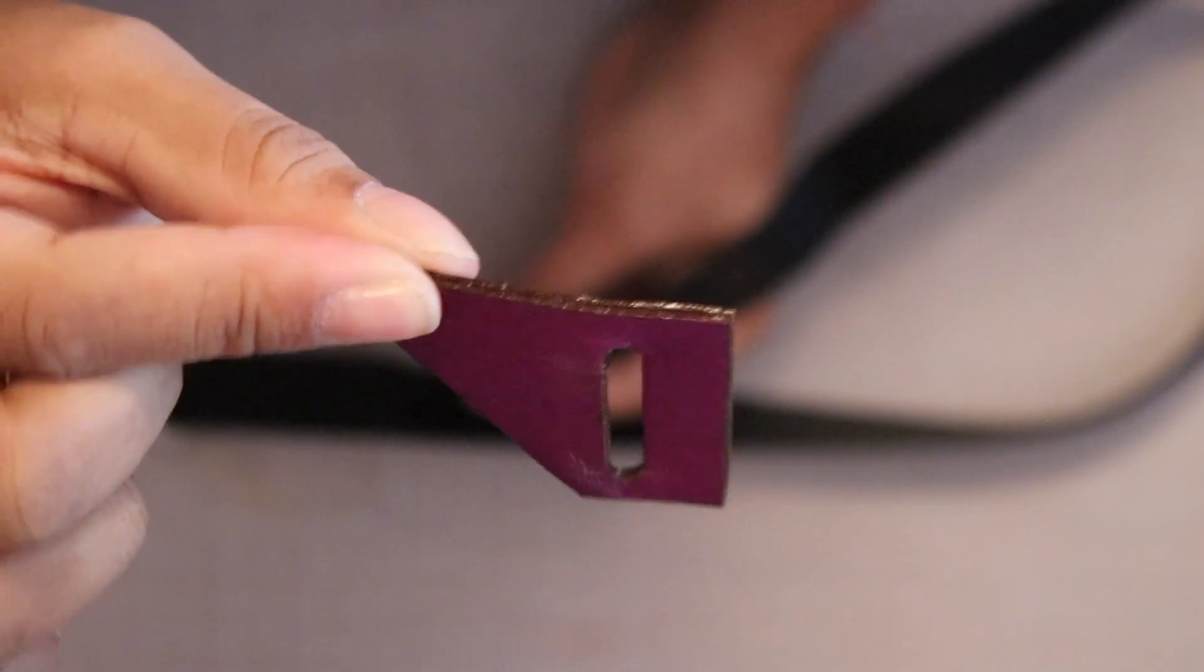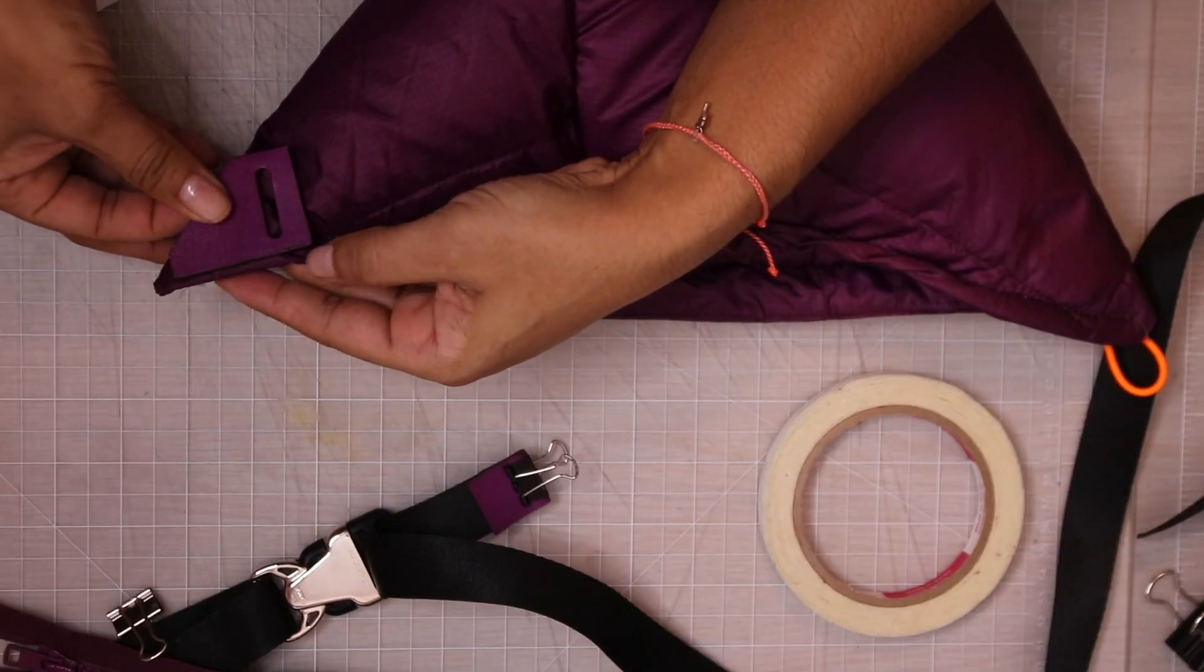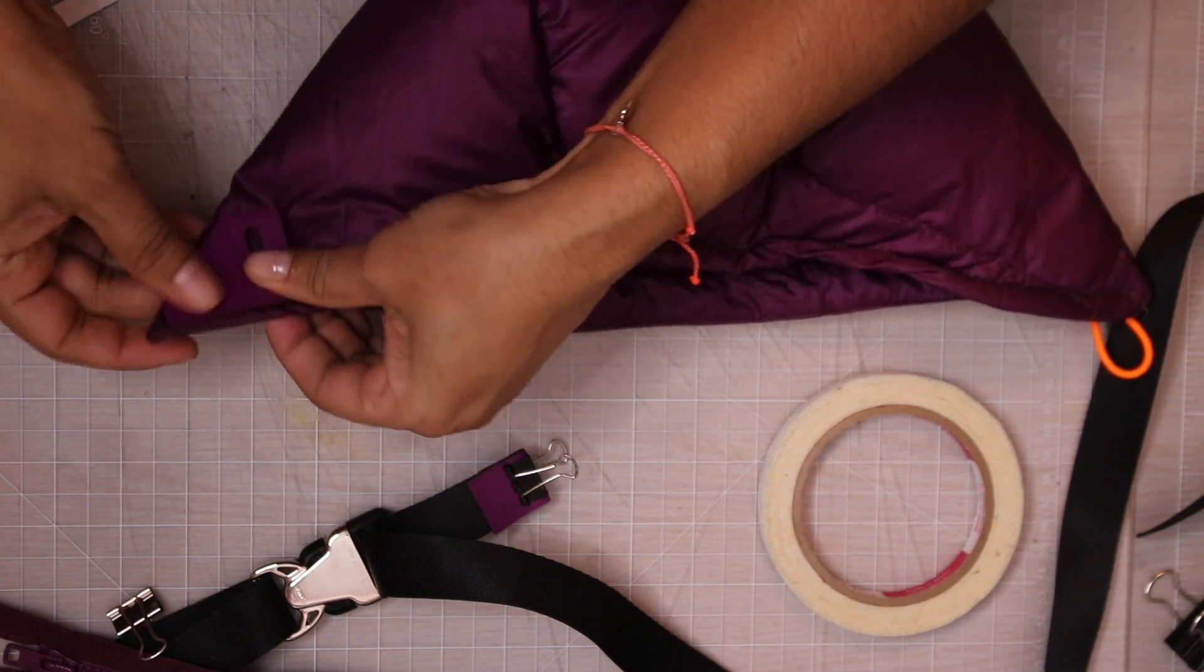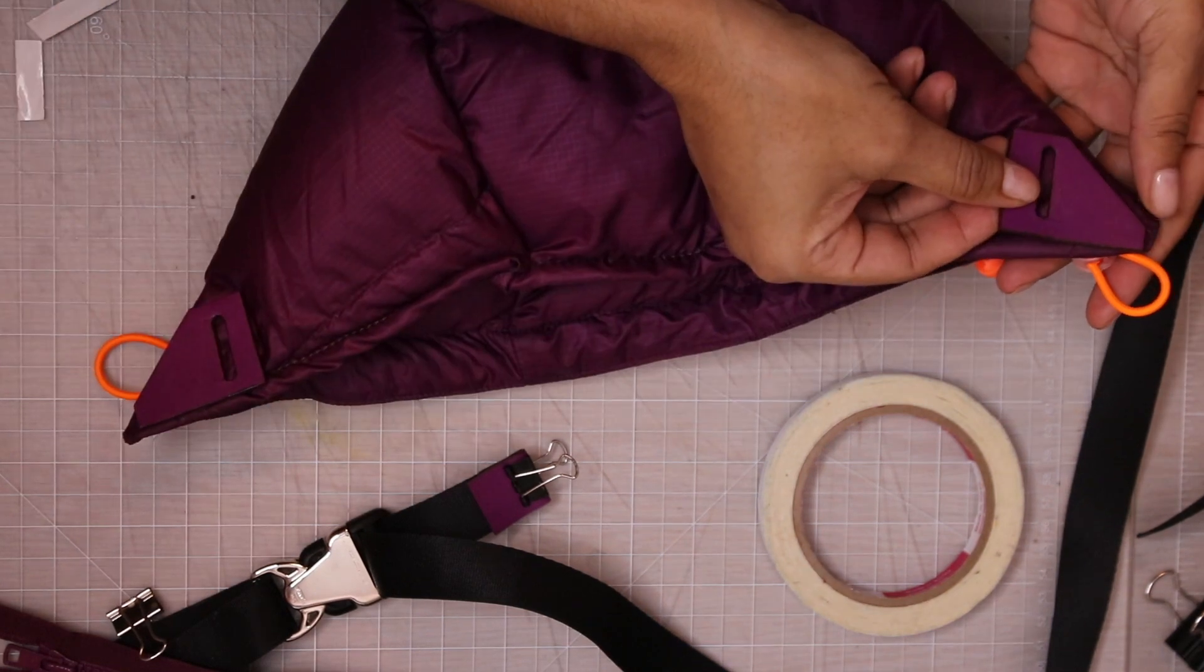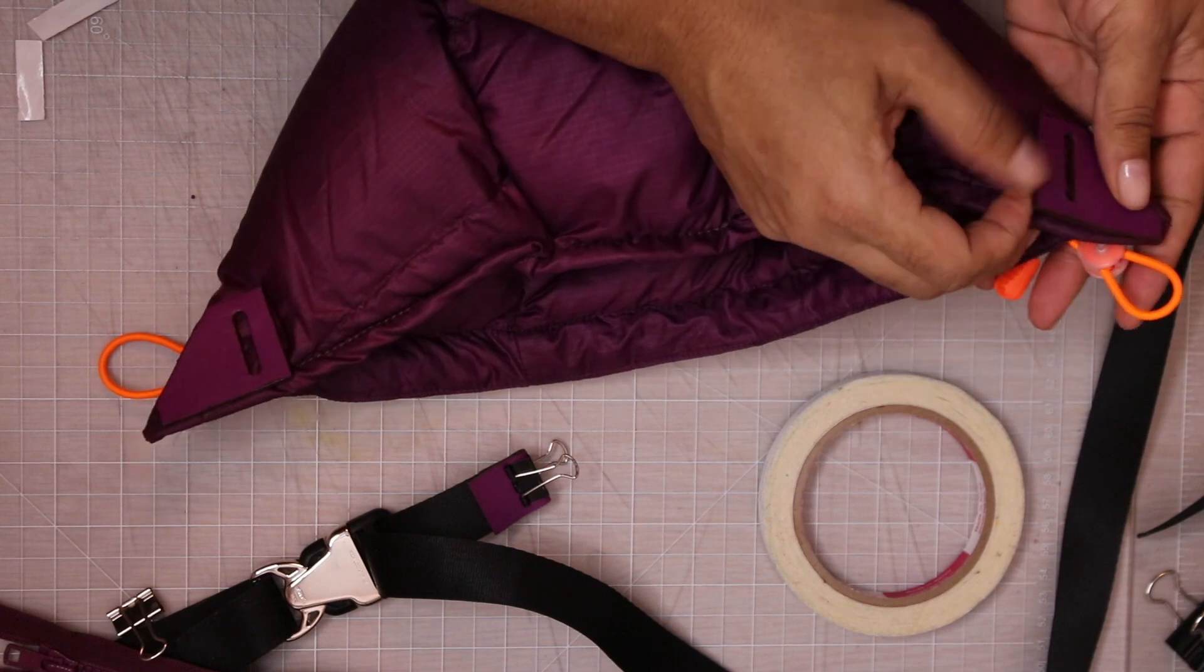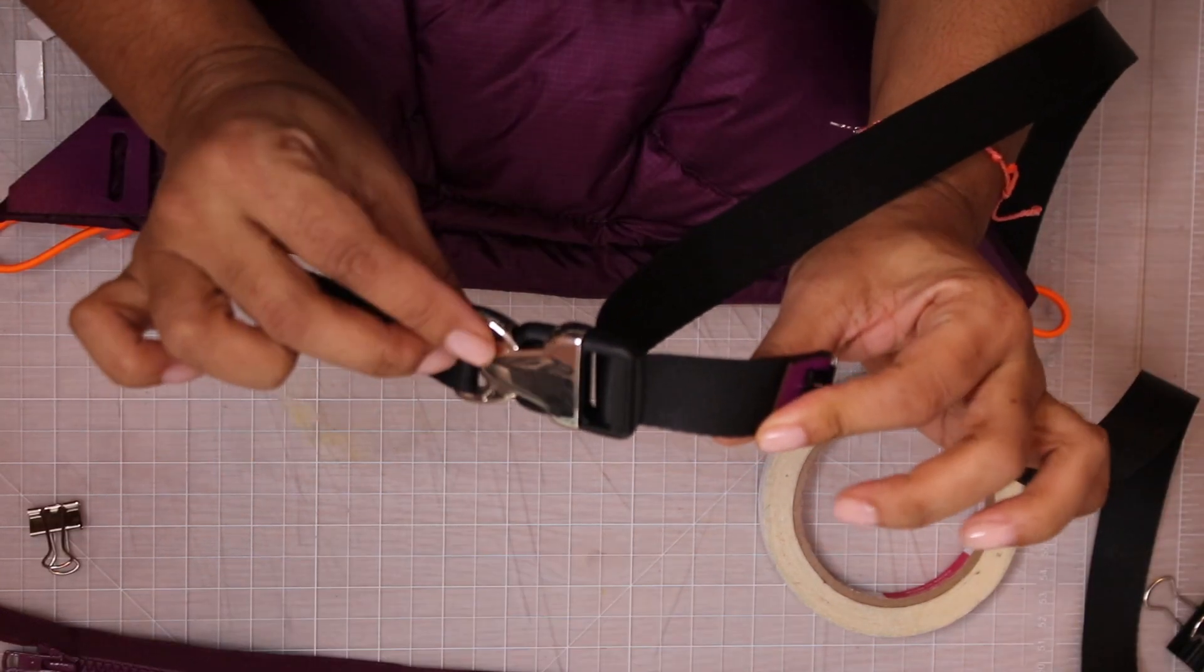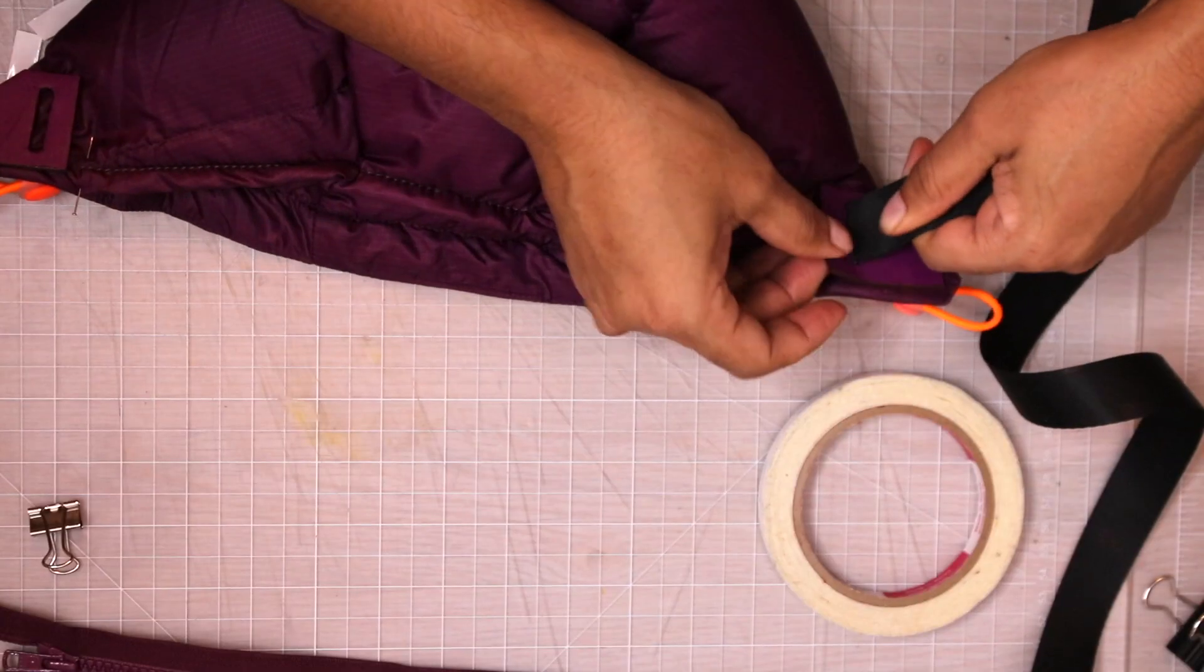If you watch my videos, you know I'd be extra, so I made these transition tabs. They are completely optional and are decorative, but they are possible if your machine can sew through lots of layers like mine. I made these to camouflage the cut ends of the webbing.